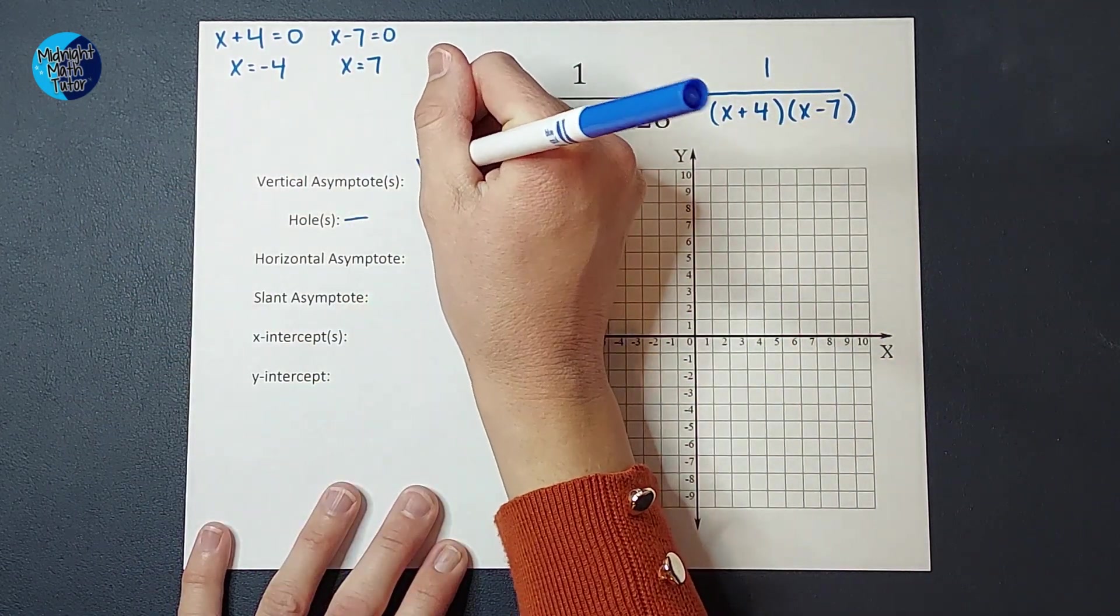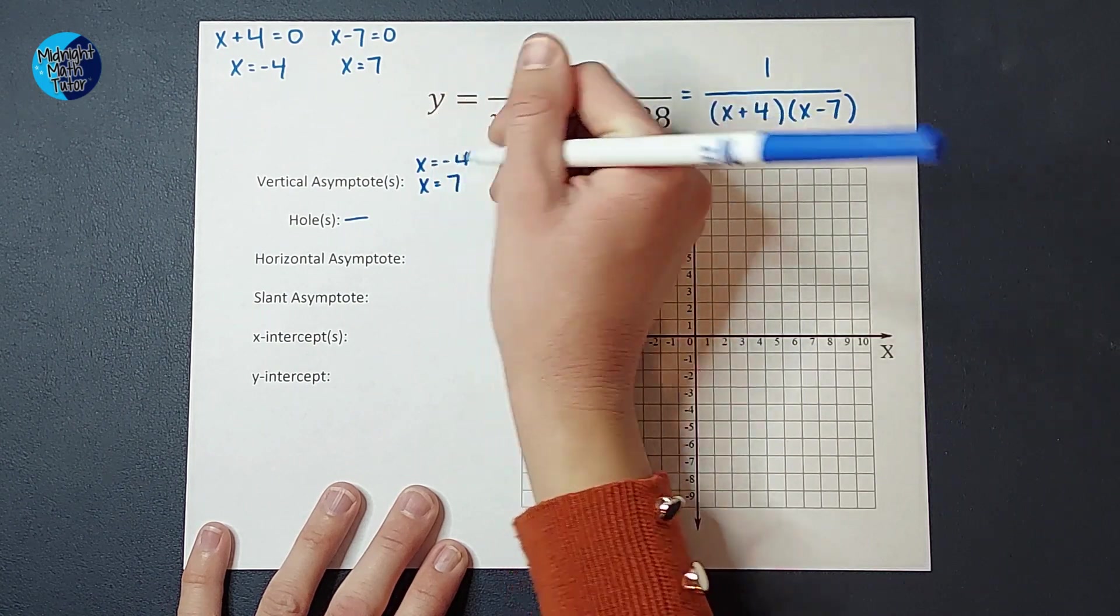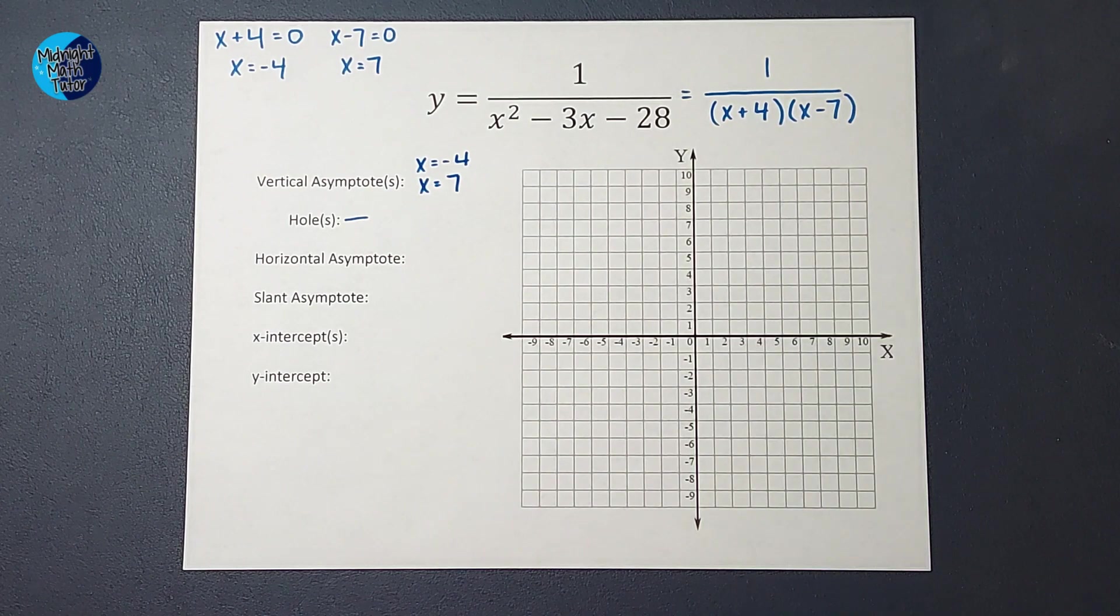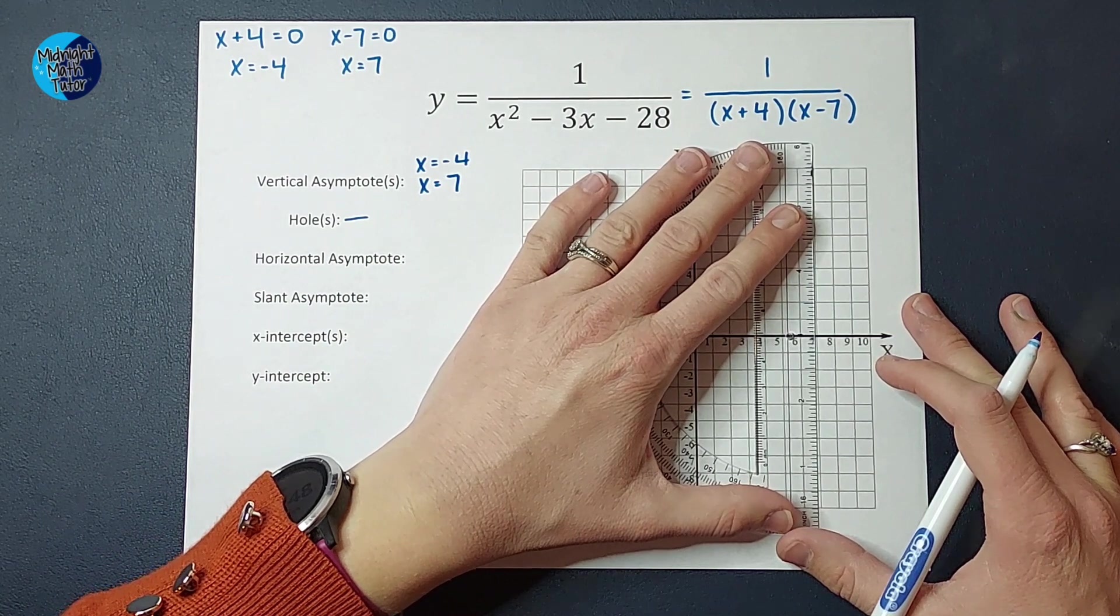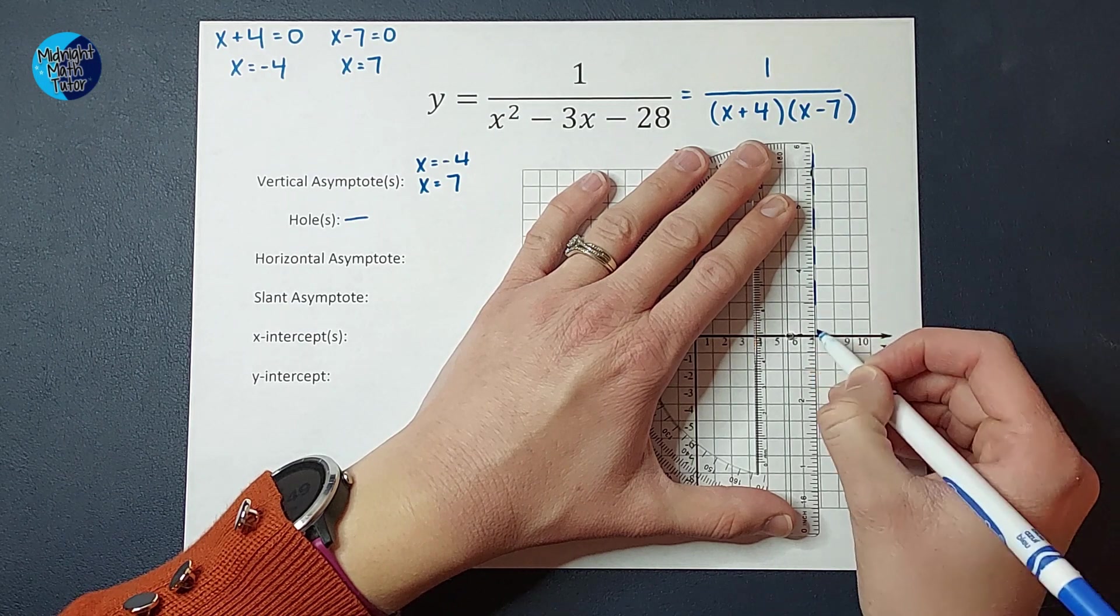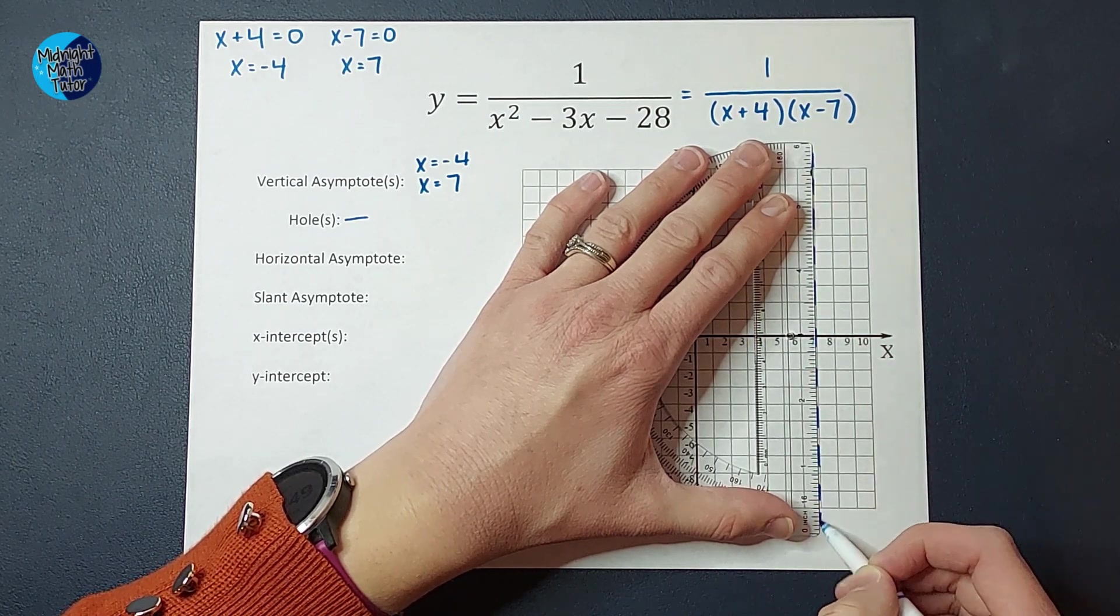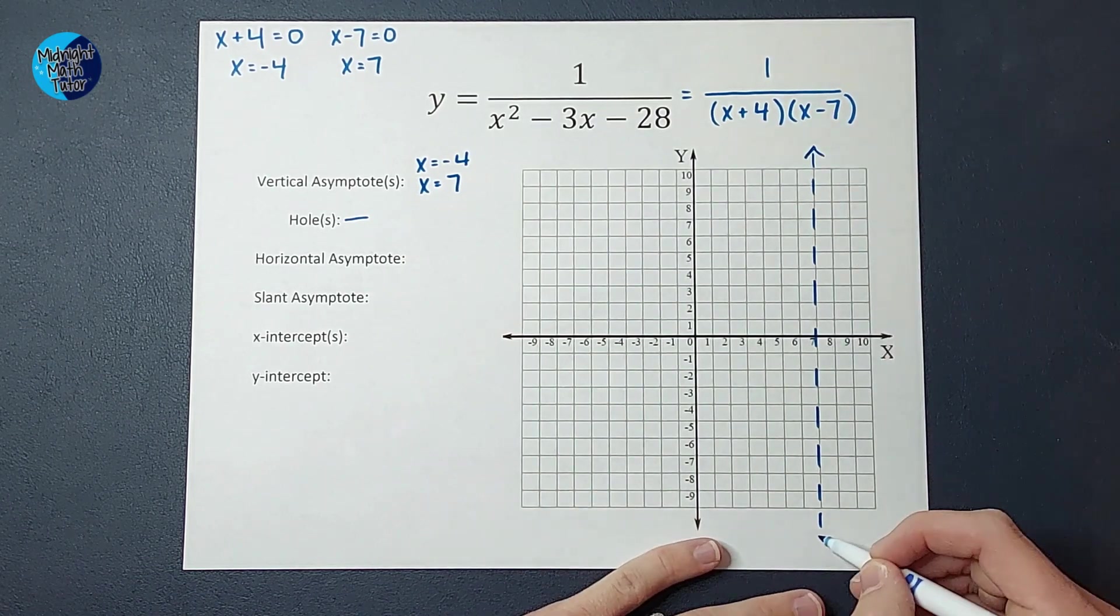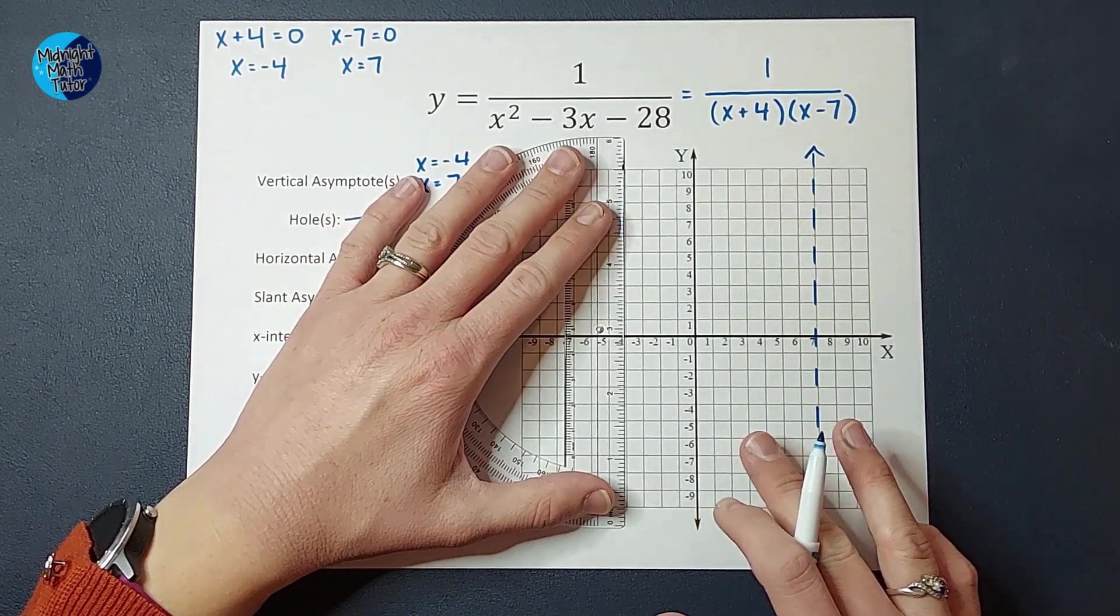Those are my vertical asymptotes. And I represent those on my graph with a dotted line. So at x equals 7, and at x equals negative 4, your graph will not cross these lines. Here we go. There's 1,